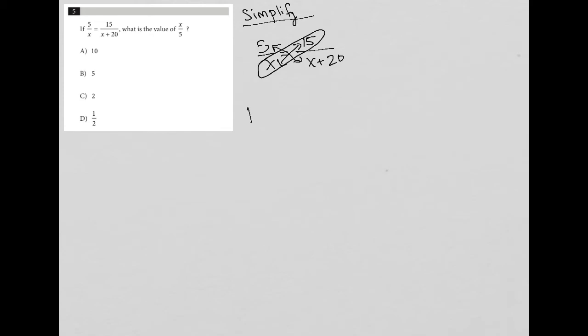And then for this top left to bottom right product, I'd have that's equal to 5 parentheses x plus 20.